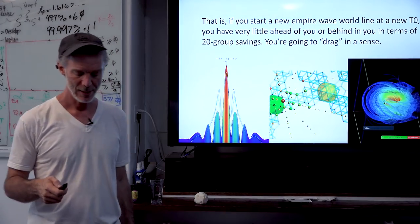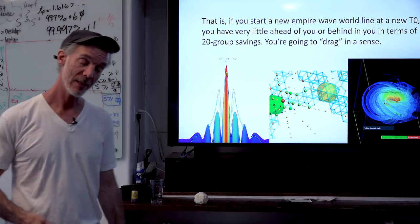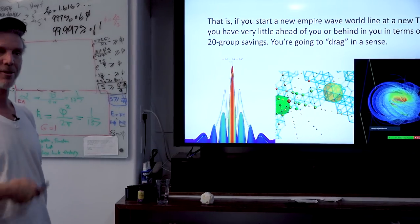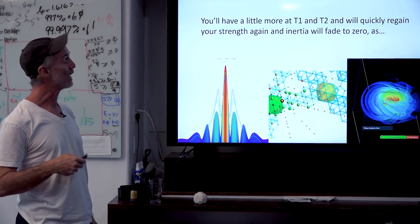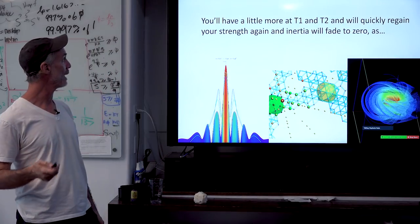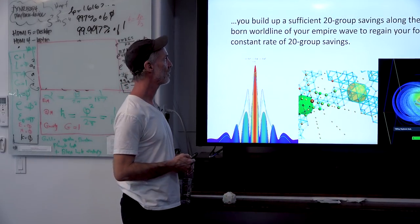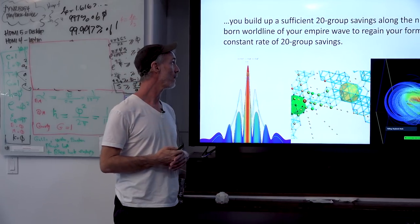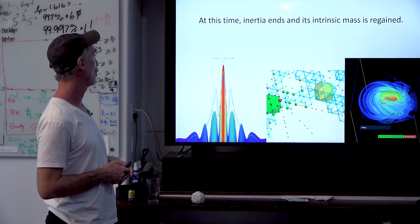This is kind of like where Stephen Hawking said before he died, 'I want to know what is it that breathes fire into the equations — what is it that animates everything?' So you'll have a little more recovery of your constant rate of 20-group savings per clock cycle at T1 and then T2, and then it'll quickly regain the full strength and inertia will fade to zero as you build up the ideal rate of 20-group savings along the newly born world line of your empire wave to regain your former constant rate of 20-group savings, your former intrinsic mass.